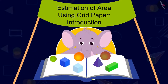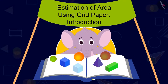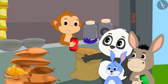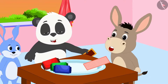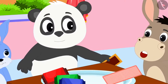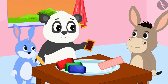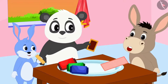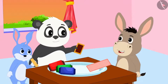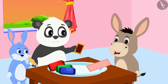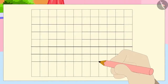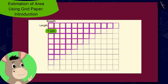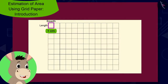Hello children, in this video we will learn to estimate area using grid paper. Banno bought different types of biscuits from the market. Look at my biscuit. It is bigger than your biscuit. Banno said to her friends. No, my biscuit is bigger than both of yours. We can immediately find out whose biscuits are the biggest using grid paper, said Bholla. Then Bholla made equal-sized squares on a paper. A paper made of equal-sized squares like these is called a grid paper.